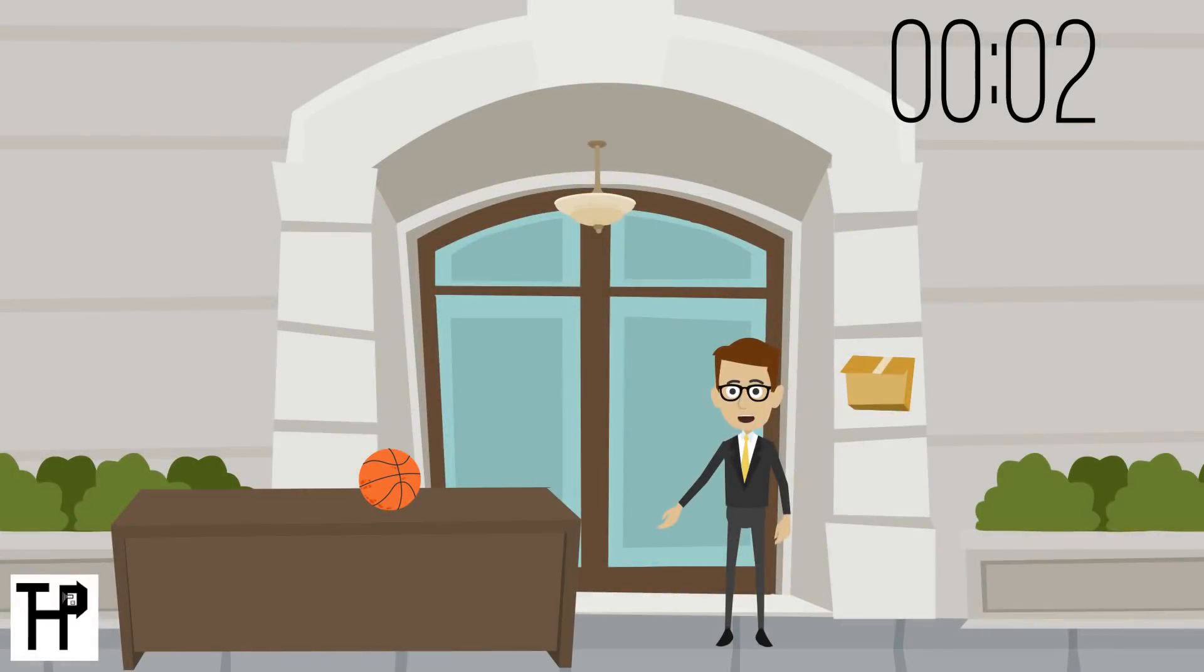As you can see, both objects fell at the same exact rate, two seconds. But why would a very heavy desk and a very light basketball fall at the same rate?